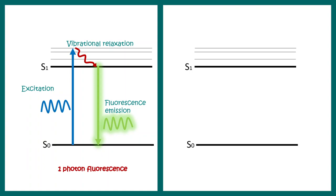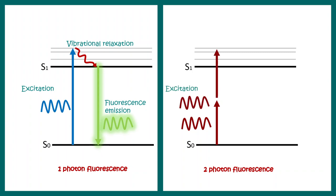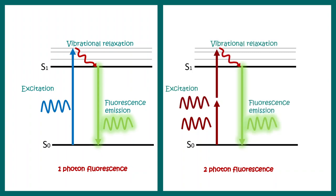But there is something called a two photon or multi-photon process. Here, instead of exciting with one particular photon, you excite with two photons, each with an energy much less than the one photon case. The sum of their energies is enough to excite an electron to jump into the excitation state, and there would be a similar vibrational relaxation and fluorescence emission. One thing to note is that the time difference between these two pulses is less than 50 femtoseconds — they are almost coinciding, and this coincidence is critical for the fluorescence phenomenon.